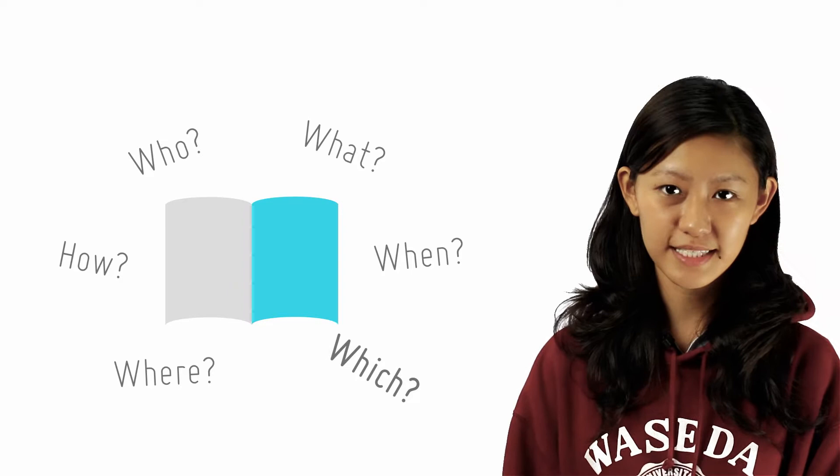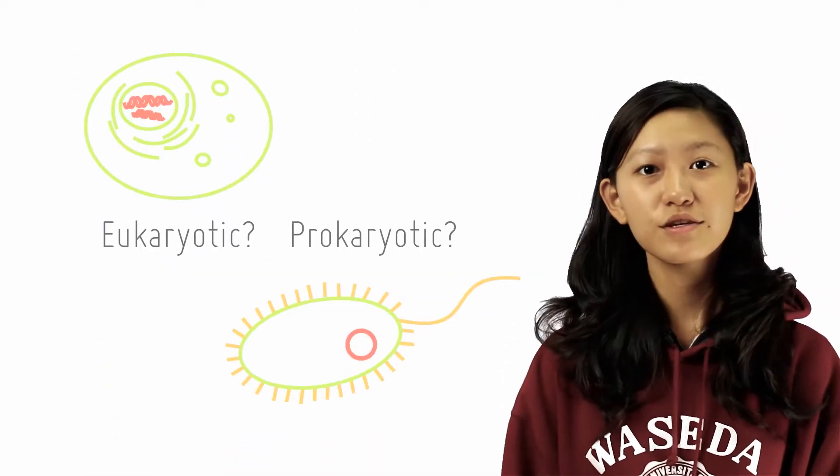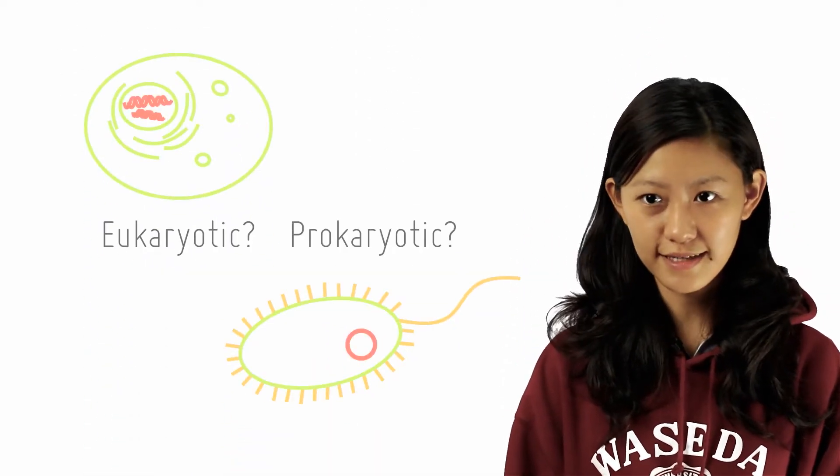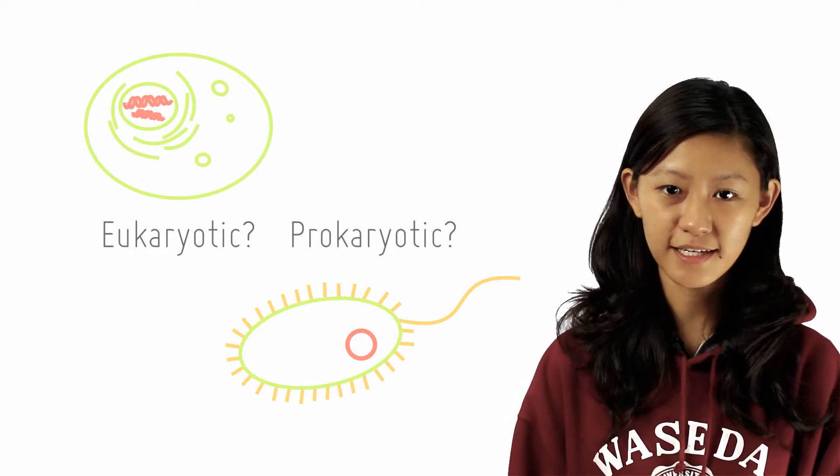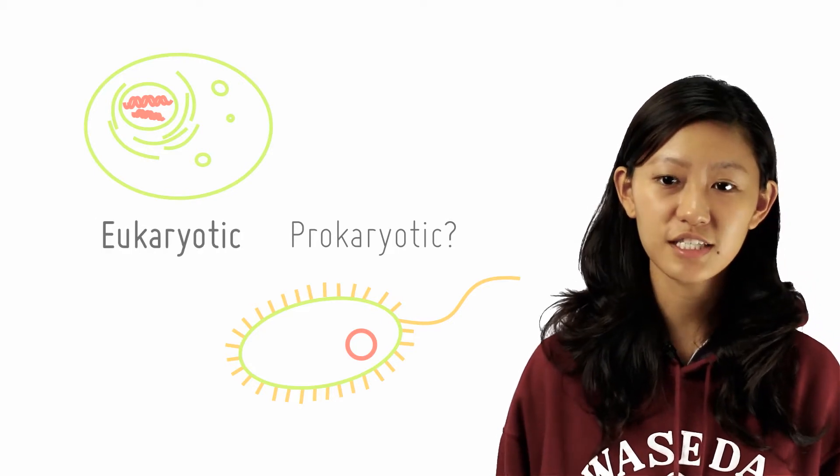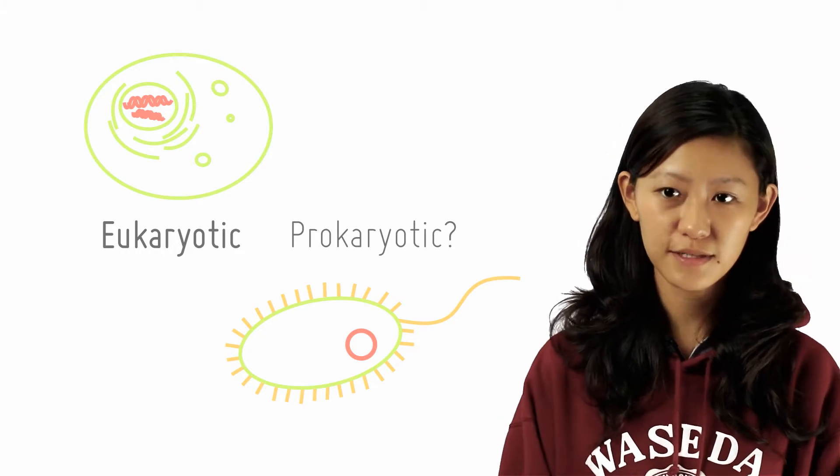When I say which, I mean which type of cell are we talking about here? Eukaryotic cell or prokaryotic cell? Since we are talking about semi-conservative DNA replication here, we are talking about the eukaryotic genome which is present as multiple linear molecules.